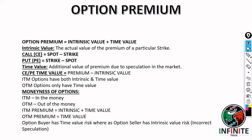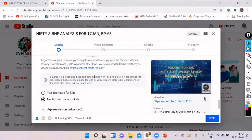Now let's talk about how option premium is calculated — not using the Black-Scholes model but the basic concept. Option premium is calculated based on intrinsic value and time value. Intrinsic value is the actual value of the premium of a particular strike. For a call option, intrinsic value is calculated as spot minus strike. Let me open an option chain to make things easier.